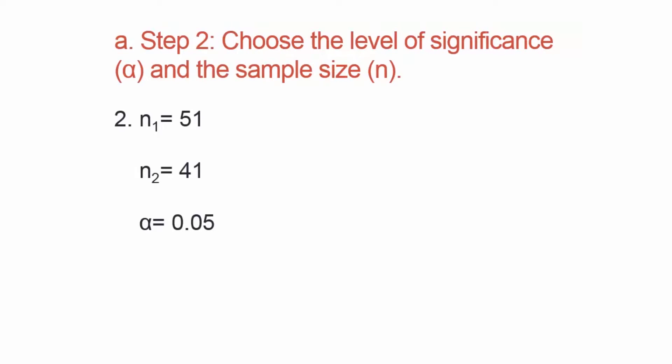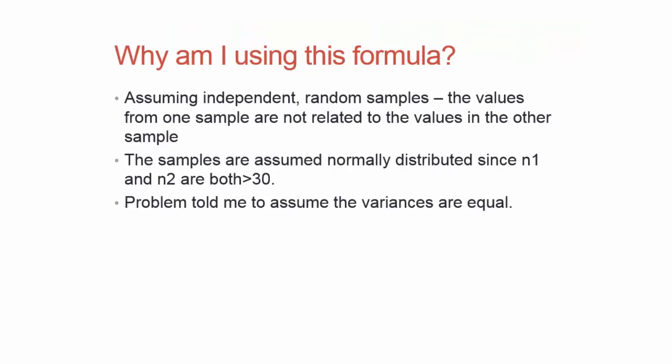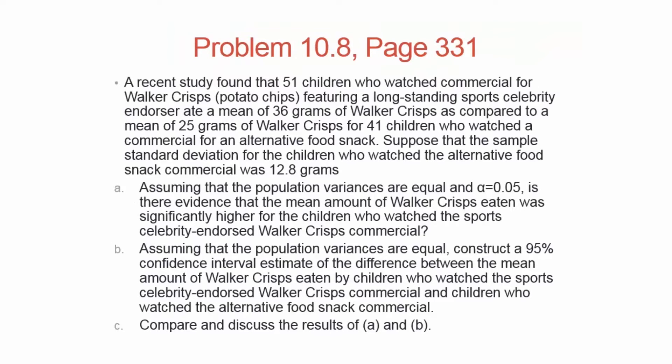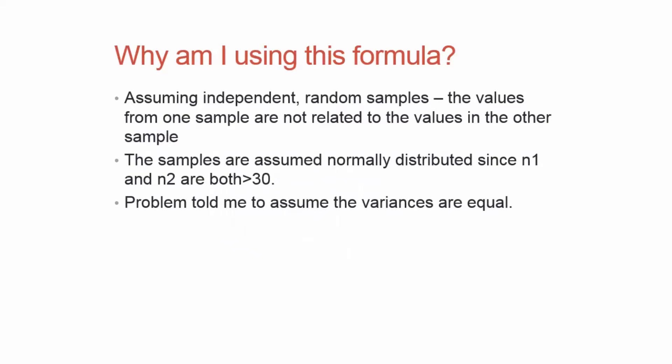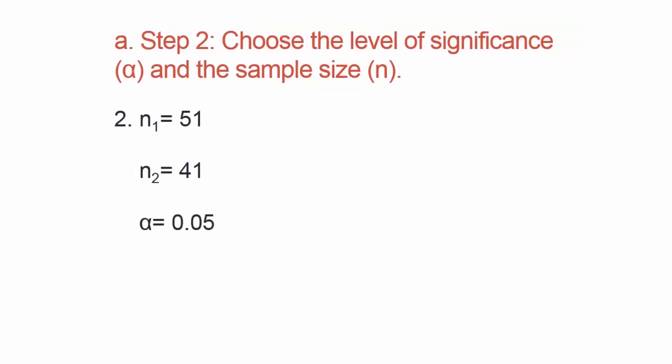Step two: choose the level of significance alpha and the sample size. Alpha is 0.05 — the problem confirmed that in part A. My sample sizes are n1 equals 51 and n2 equals 41. Notice I didn't say the combined sample size is 92 — that would be incorrect because I have two samples from two different populations. So I list them separately: n1 is 51 and n2 is 41.